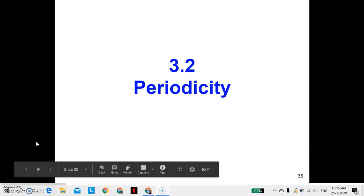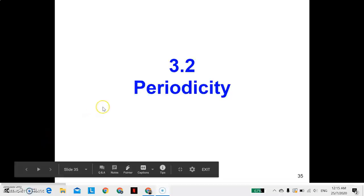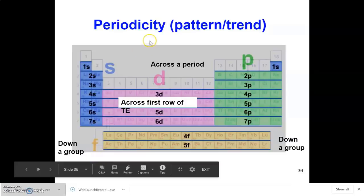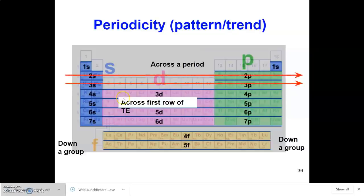Hi everyone, we are now entering the new sub-topic for chapter 3: periodicity. Periodicity is a pattern or trend. The third learning outcome for this chapter is to describe the variation in atomic radius across a period, across the first row of the transition elements, and also down the group.